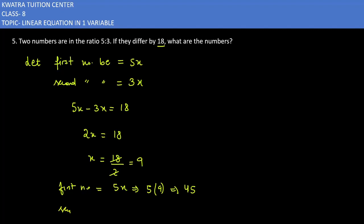Second number is 3x, 3 into 9, which is 27. So first number 45 and the second number is 27, and their difference is 18. So that's your answer for the fifth one. Now moving to the sixth question.